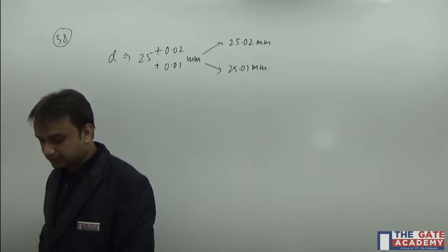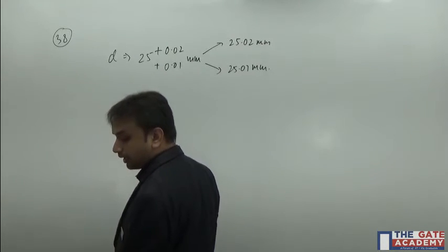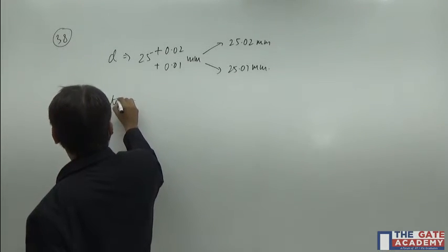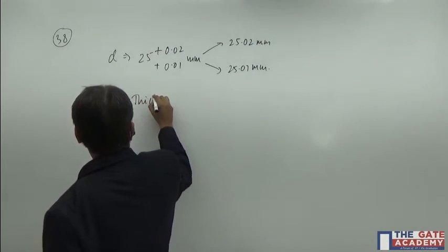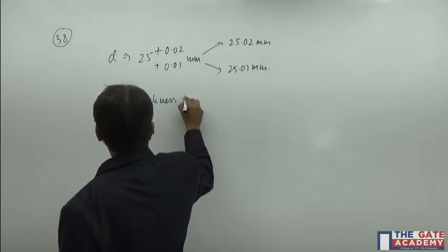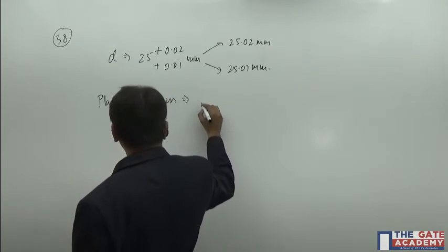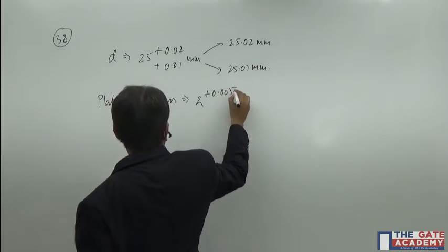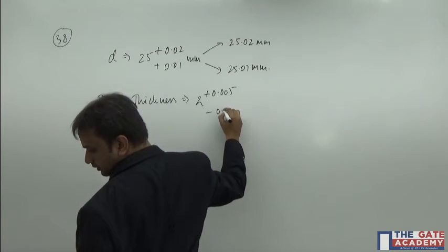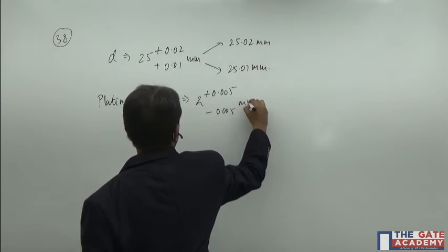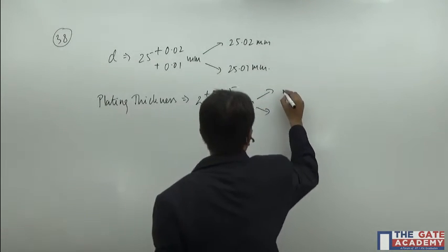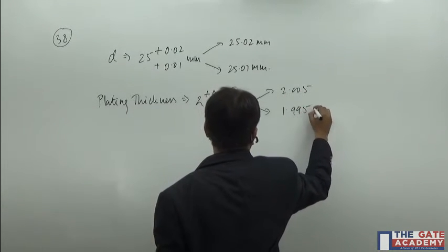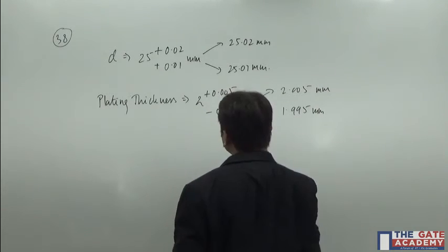And the plating thickness is given to you as 2 plus 0.005 and minus 0.005 mm. So that means it is again making two dimensions, which is 2.005 and 1.995 mm.